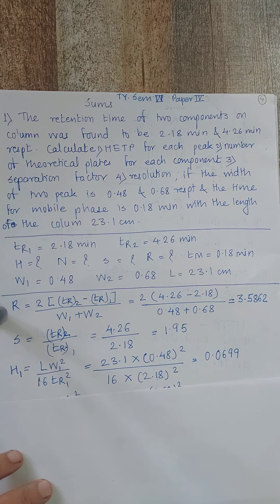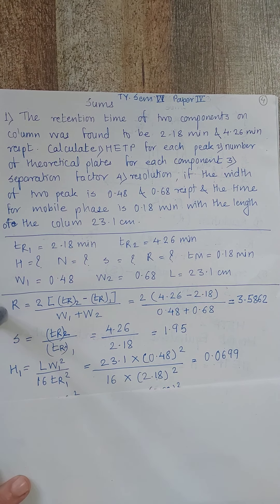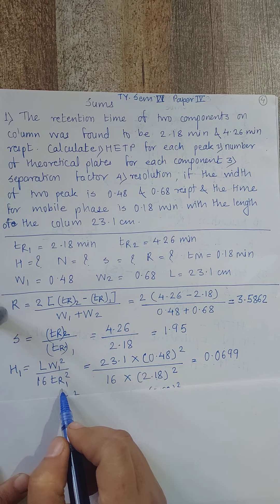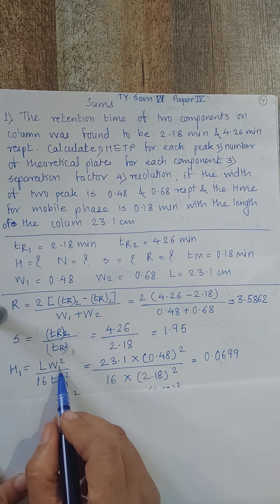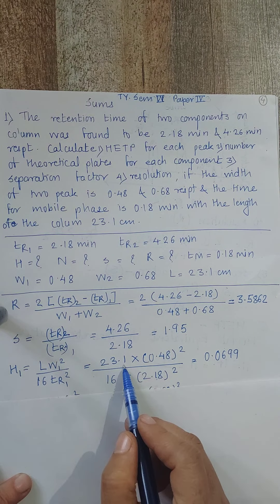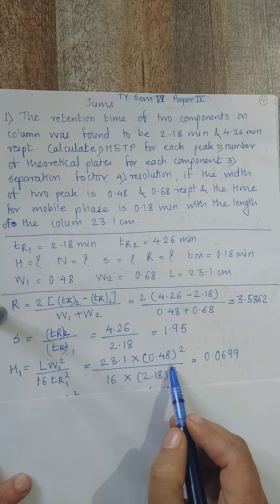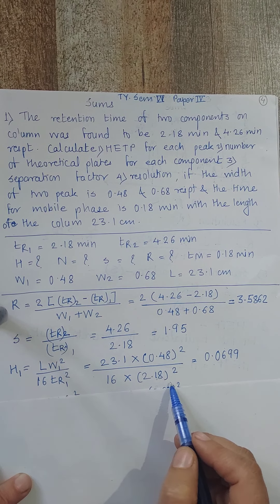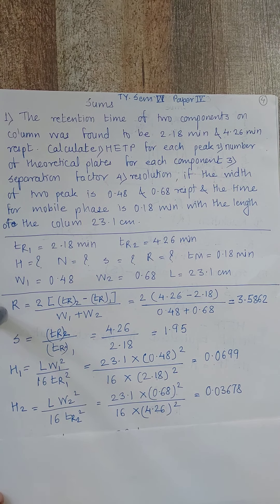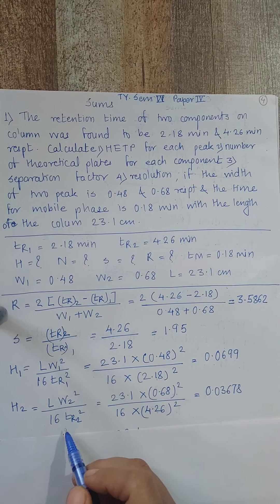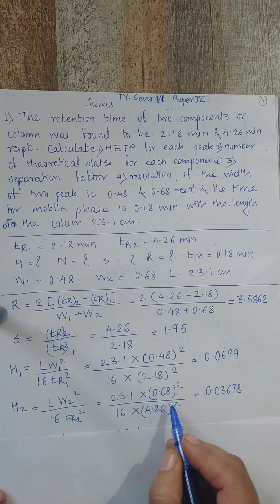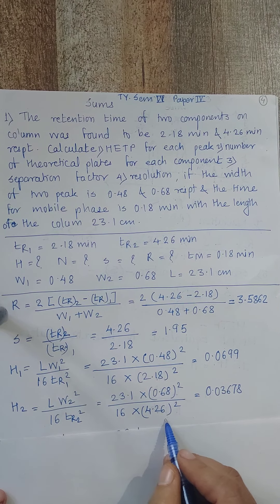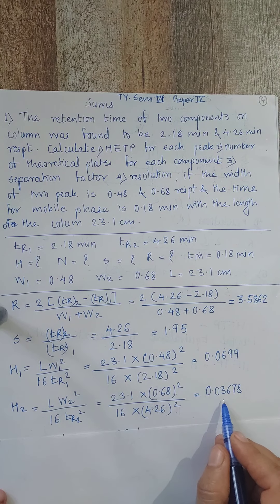Next, find H or HETP for both components. The formula is: H = LW² / (16 TR²). For the first component: H1 = 23.1 × (0.48)² / (16 × (2.18)²) = 0.0699. For the second component: H2 = 23.1 × (0.68)² / (16 × (4.26)²) = 0.03678.